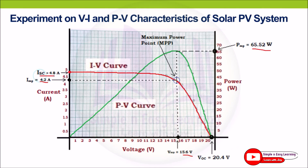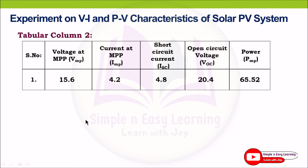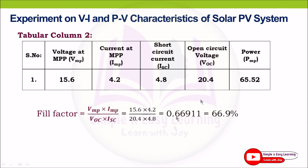Short circuit current is 4.8 A and open circuit voltage is 20.4 V. Entering all values in tabular column 2 — voltage at maximum power point, current at maximum power point, short circuit current, open circuit voltage, and power — we can find the fill factor: FF = (VMP × IMP) / (VOC × ISC) = 0.66911, which equals 66.9 percent.